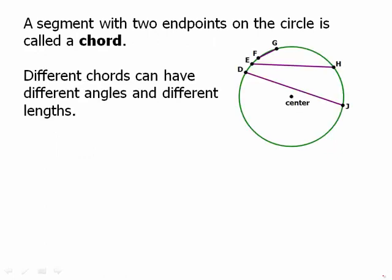A segment with two endpoints on the circle is called a chord. Different chords can have different angles and different lengths. FG is a relatively short chord, EH is longer, and DJ goes almost all the way across the circle. That's a much longer chord.